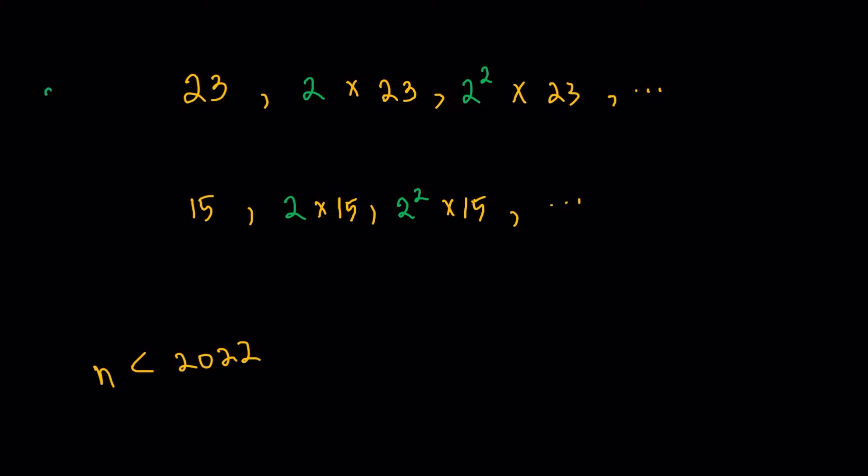So, the general format in the first one, it's just going to be 2 raised to k times 23. And then in the second one, it's just going to be 2 raised to k times 15. To try to solve for k in both cases, that's going to allow me to get how many are there in each case. So, I'm going to consider the first case, 2 raised to k times 23. So, 2 raised to k times 23, that's obviously going to be less than 2022.